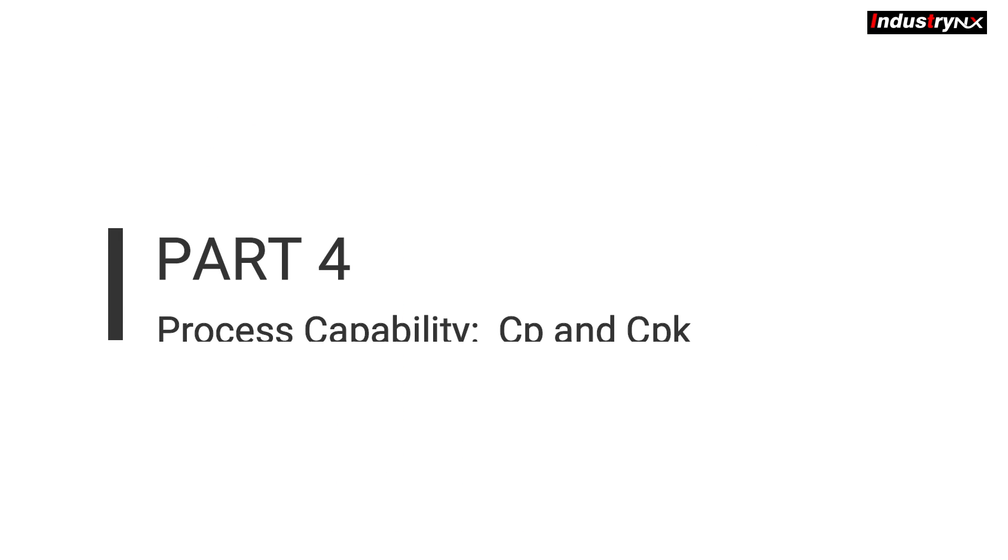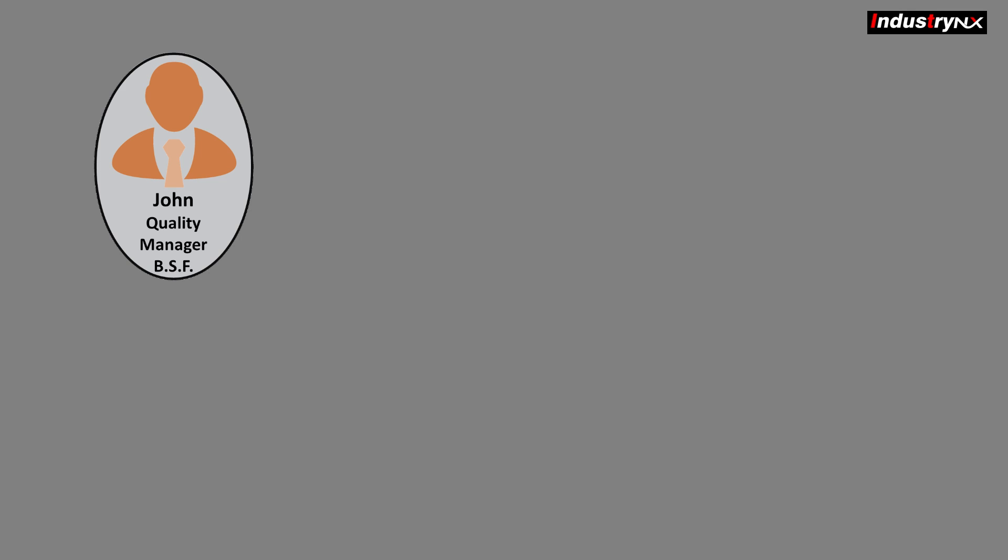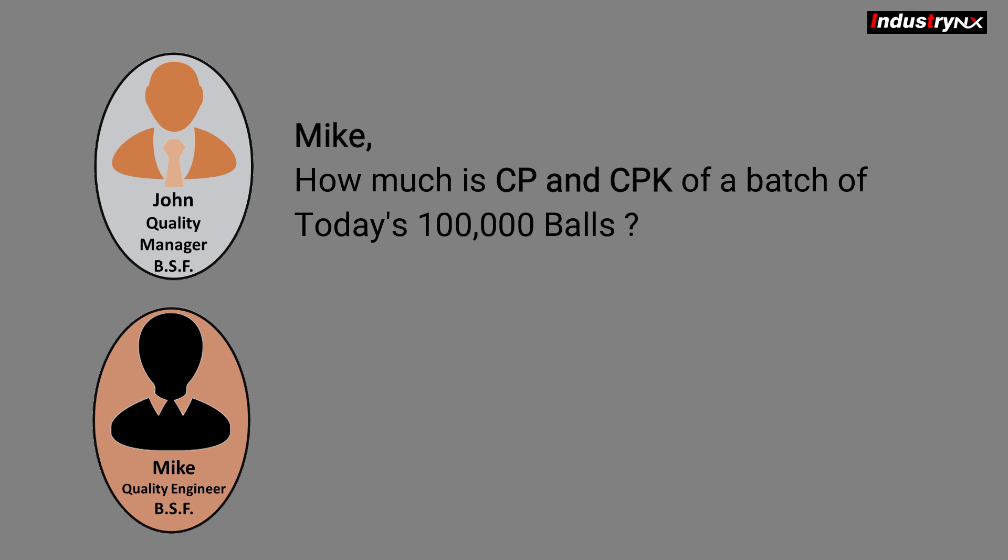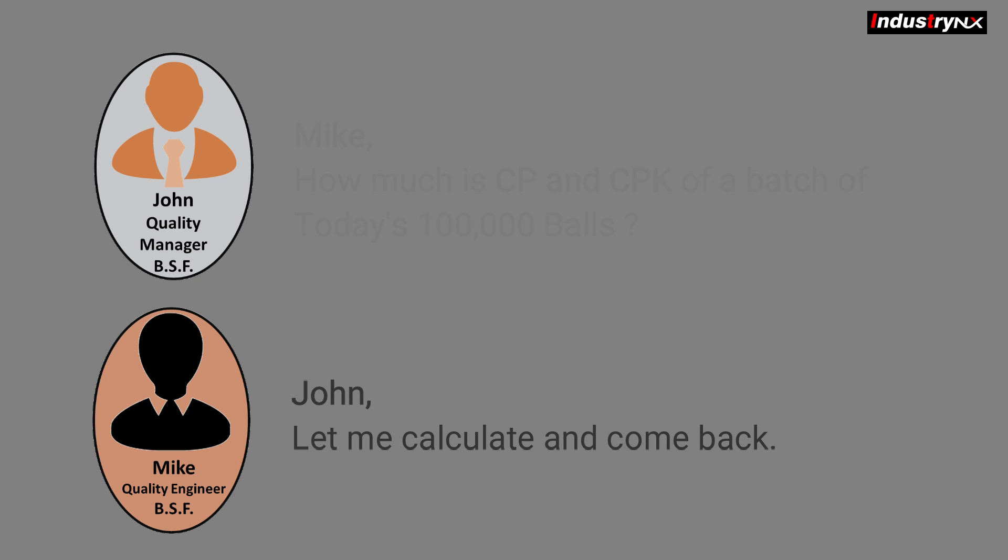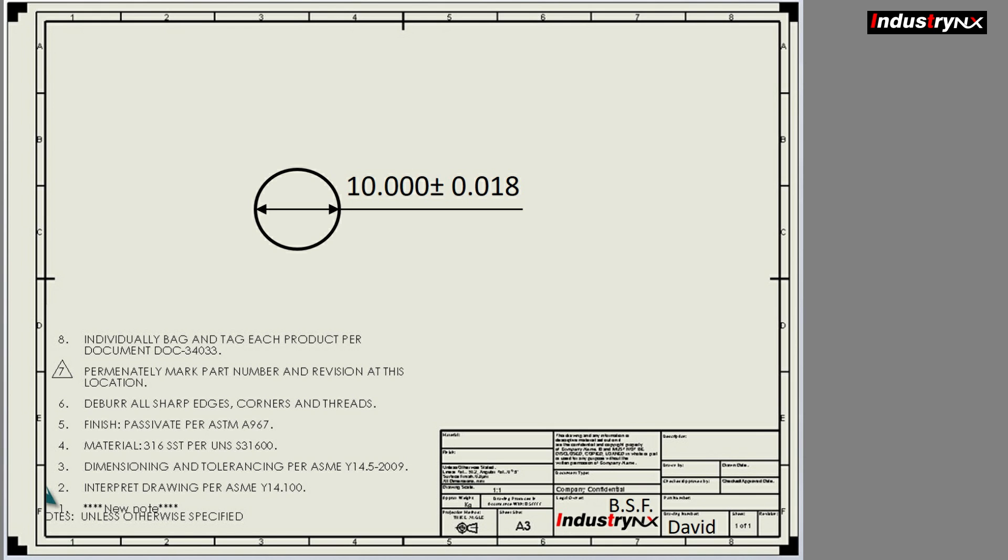Today let us move to next terminology, that is process capability, which is mainly used by senior leadership in manufacturing industry as they are more familiarized with this term and simple to conclude. CP and CPK are called process capability. Before we start on process capability, you should know few terms.